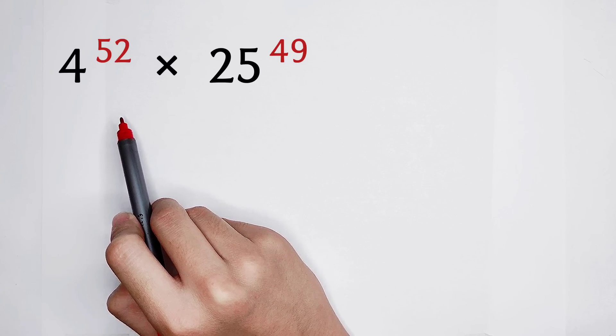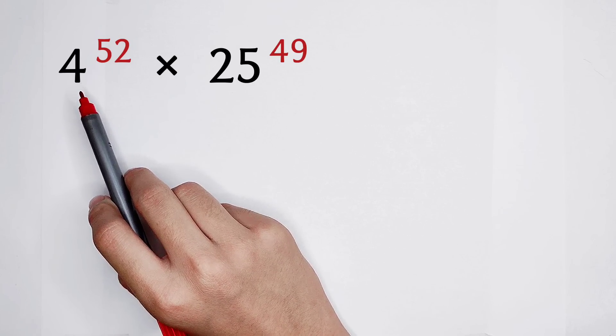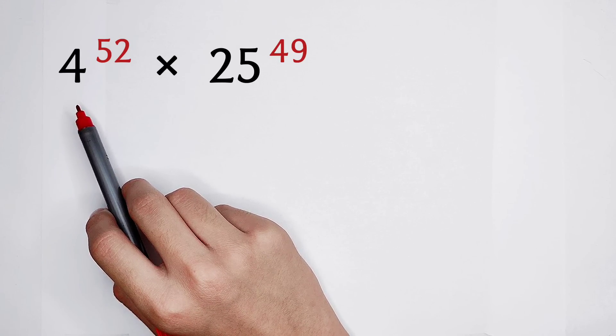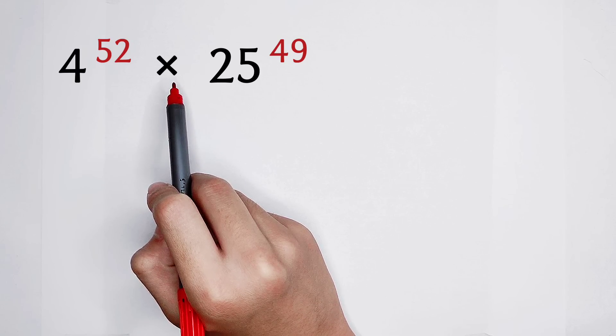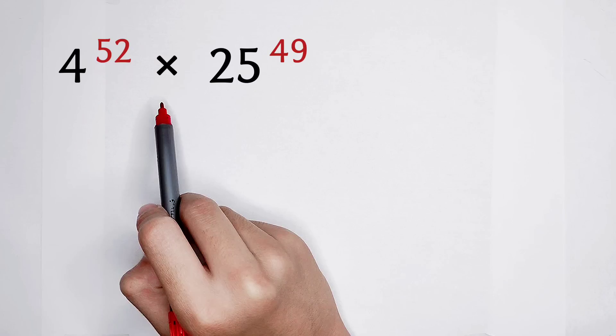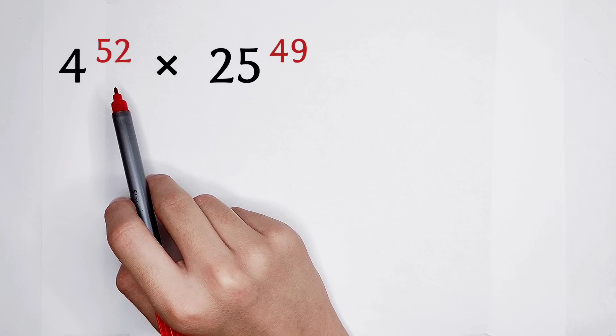How can we solve it? First, we have to pay attention to the exponents. This exponent of 4 is 52, and the other exponent of 25 is 49. So they are pretty close. Then, I have a wonderful method.